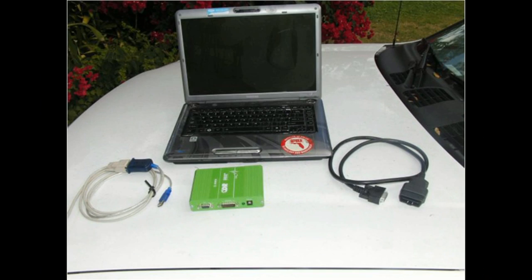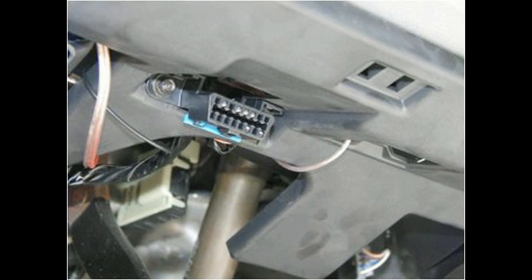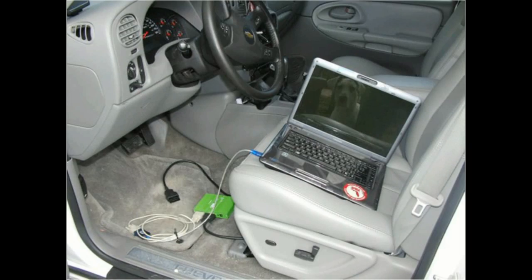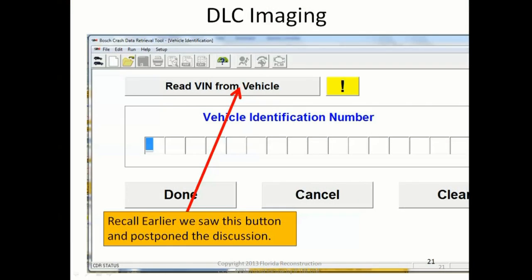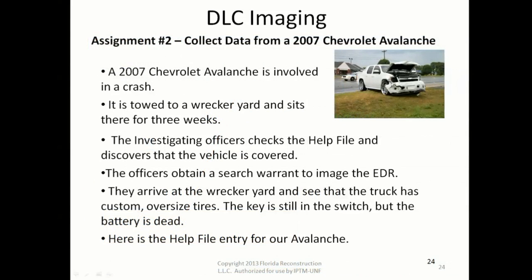We've demonstrated our first image. This image was conducted via the vehicle's DLC. DLC images are easy. Earlier, we saw this button — and here it is at the top — it says 'Read VIN from vehicle.' So now let's move on to assignment number two.